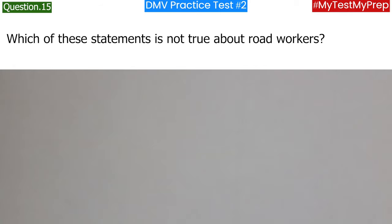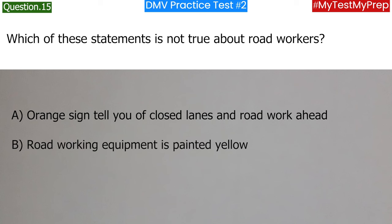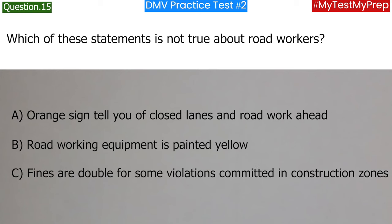Which of these statements is not true about road workers? a. Orange signs tell you of closed lanes and road work ahead; b. Road working equipment is painted yellow; c. Fines are double for some violations committed in construction zones. Answer: b. Road working equipment is painted yellow.